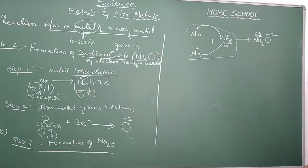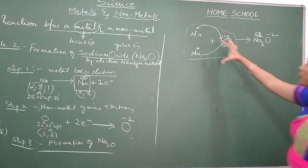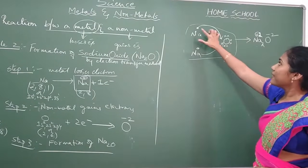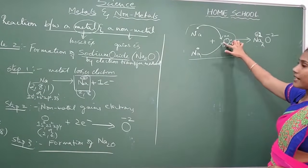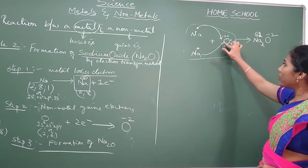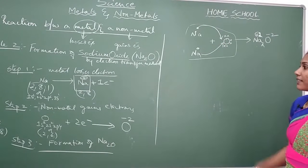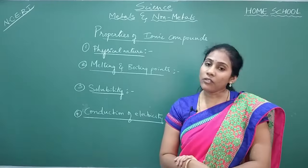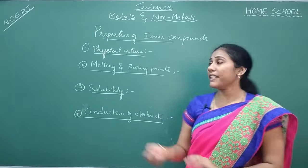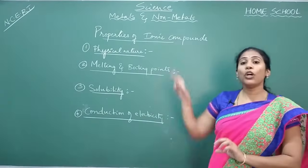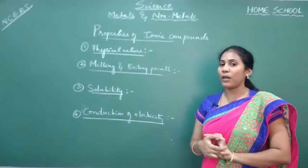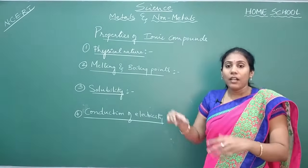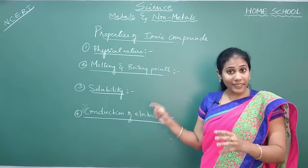This way of showing is very, very important for the examination. 2 Na's separately you have to write, then oxygen, with their dot structures, and this is what we call electron transfer. This is the formation of Na₂O. Now let us discuss about the properties of ionic compounds.